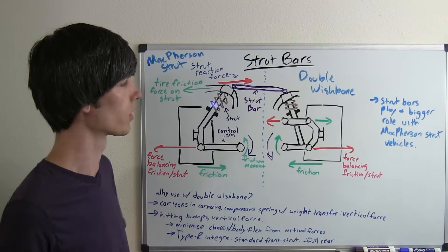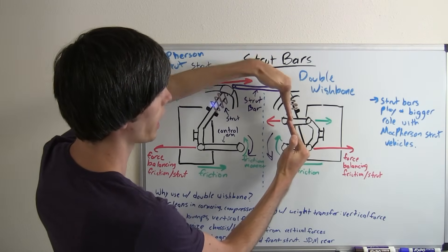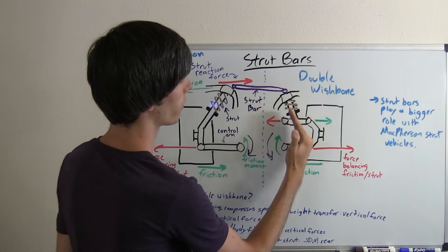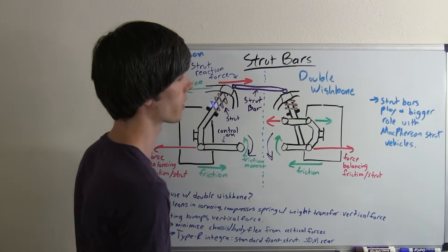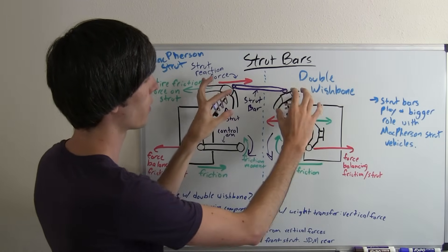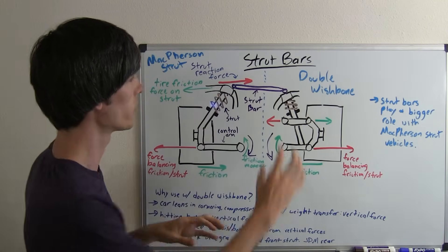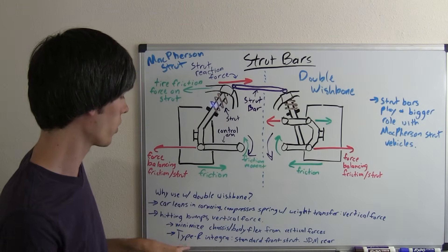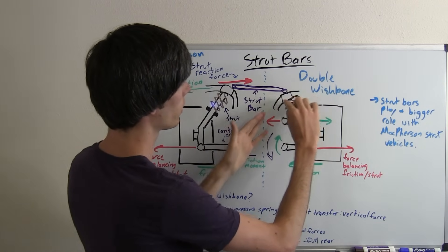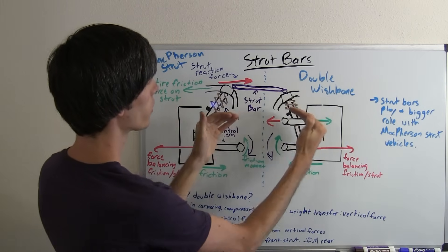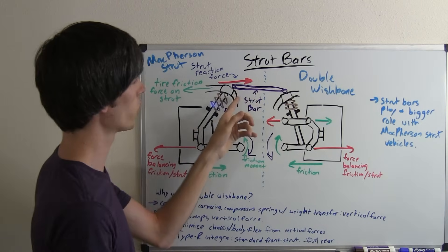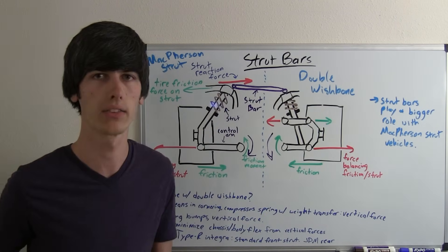Well as the car leans in cornering it's going to compress that spring and as the weight transfers over and the body rolls you are going to have a vertical force pressing on the body of the car. By connecting that you can transfer this force across the strut bar and allow both sides of the car to take on that force. Also if you hit a bump you're going to have a very large vertical force going to that one single strut tower, so if you've connected your strut bars the horizontal component of that force will pass over and you can absorb the force with both sides of the strut tower.